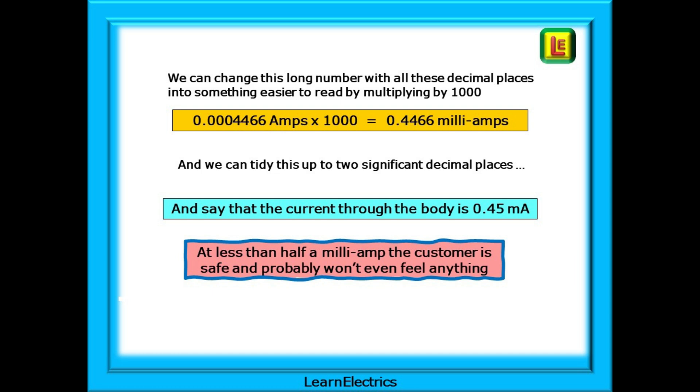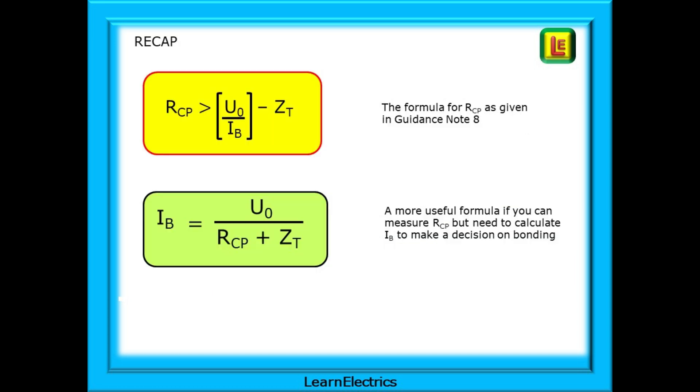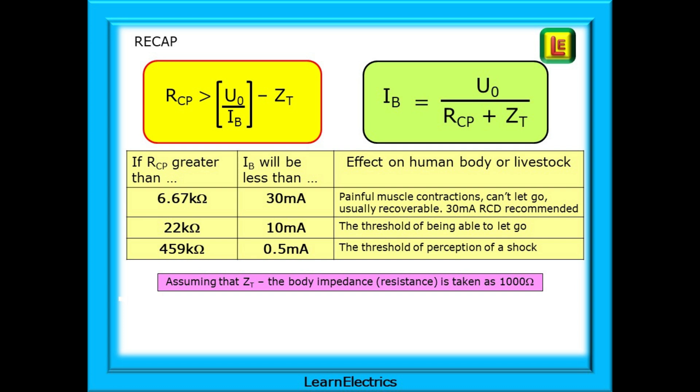A quick recap on the two formulas that we used. RCP can be found by dividing the nominal voltage by the desired maximum fault current through the body, and then subtracting the impedance of the body, which is often taken as 1000 ohms. We rearranged this formula to arrive at a second one that would give us the current flowing through a human body if we already know the resistance to the conductive part. This was achieved by dividing the voltage by the sum of the measured resistance and the impedance of the body. Now we can calculate either the minimum resistance, RCP, or we can calculate the maximum current, IB. This table gives a reminder of these resistances and currents and their effect on the human body or livestock.